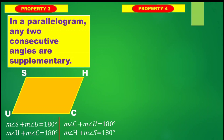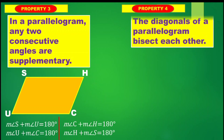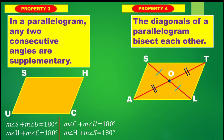Property number four: the diagonals of a parallelogram bisect each other. From the word bisect, that means it is being divided into two equal parts. We have diagonal SL and diagonal AT.